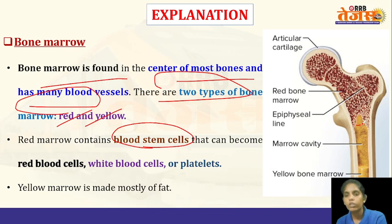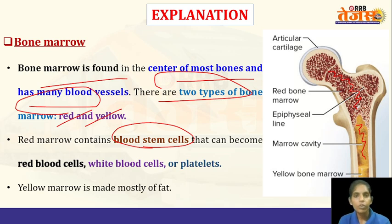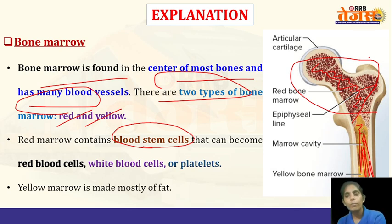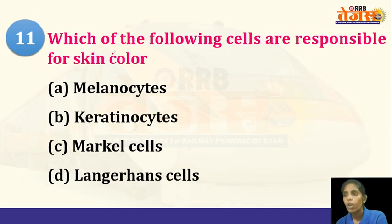As age proceeds, adults have more yellow bone marrow, while red bone marrow is confined to the epiphyseal plates. In infants, the medullary cavity of the bone also has red bone marrow. Next question: which of the following cells are responsible for skin color — melanocytes, keratinocytes, Merkel cells, or Langerhans cells? The answer is melanocytes.